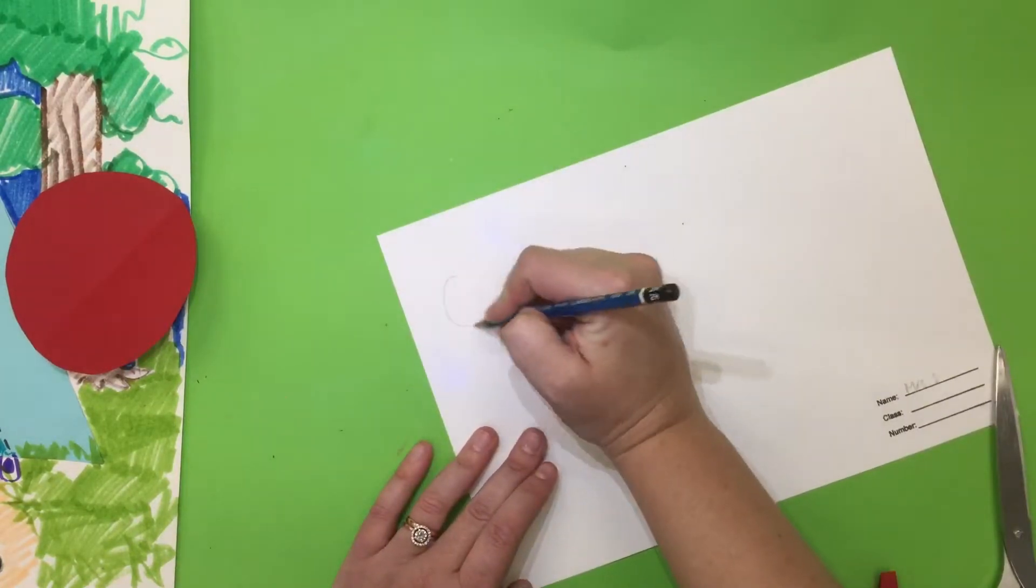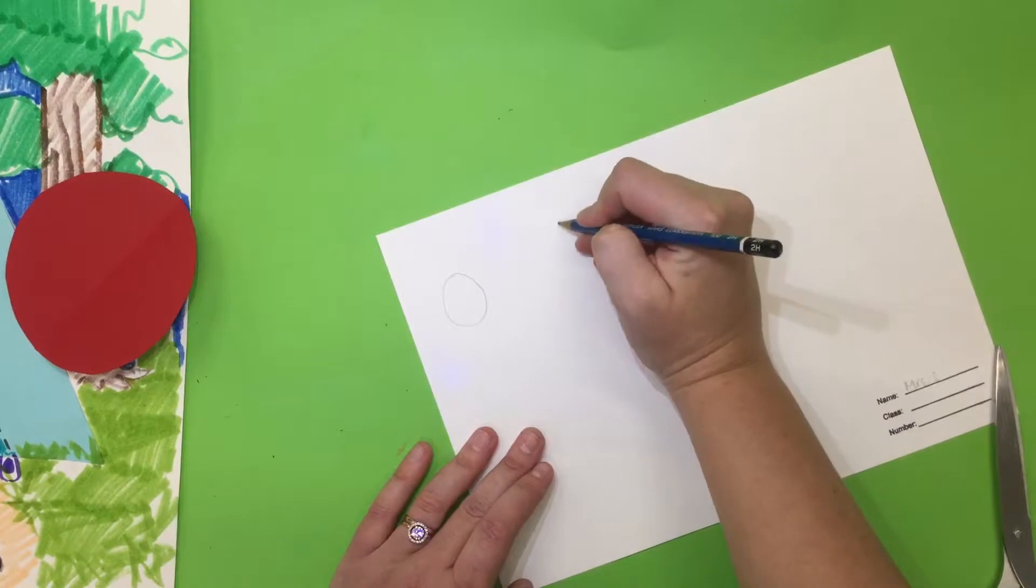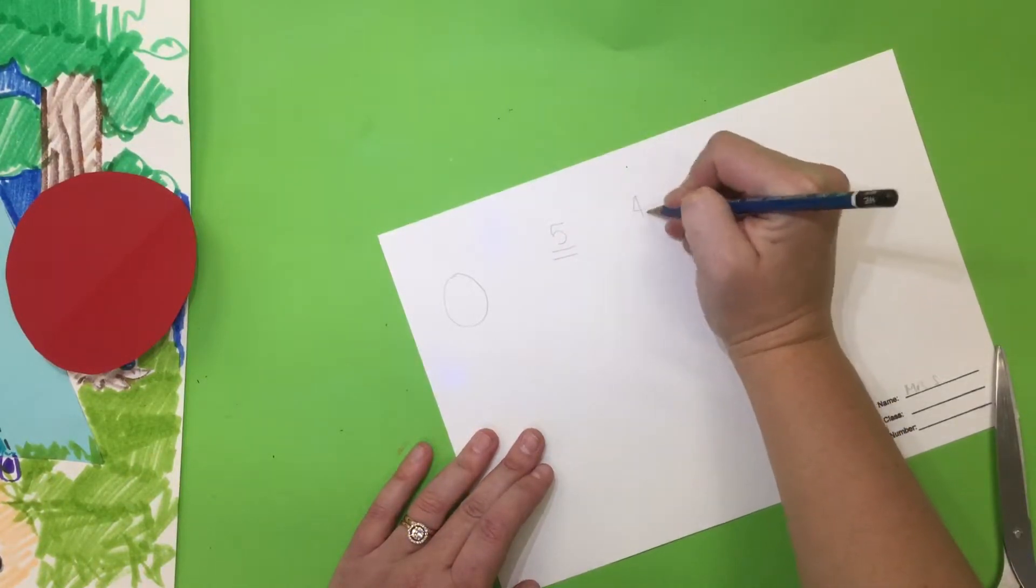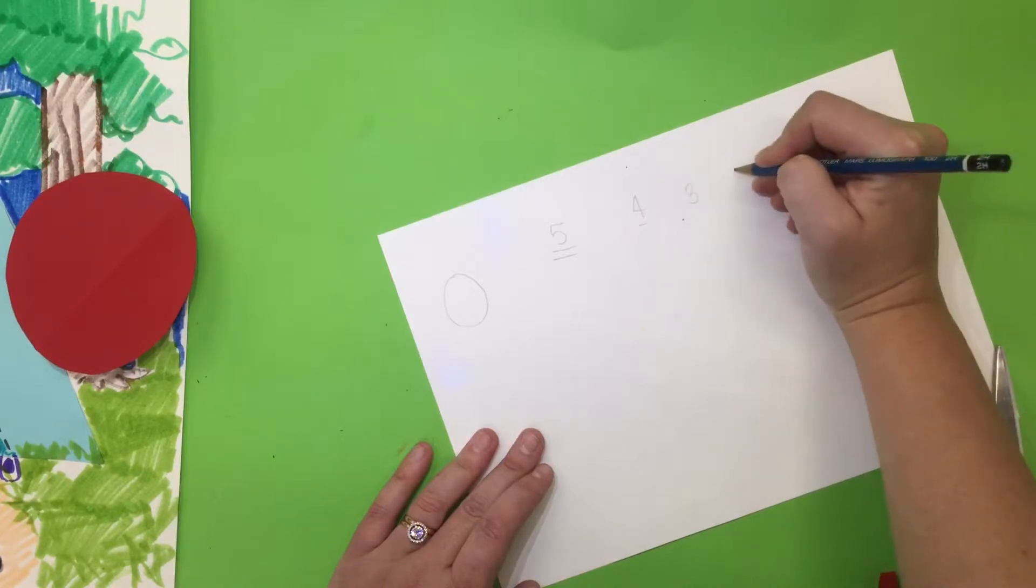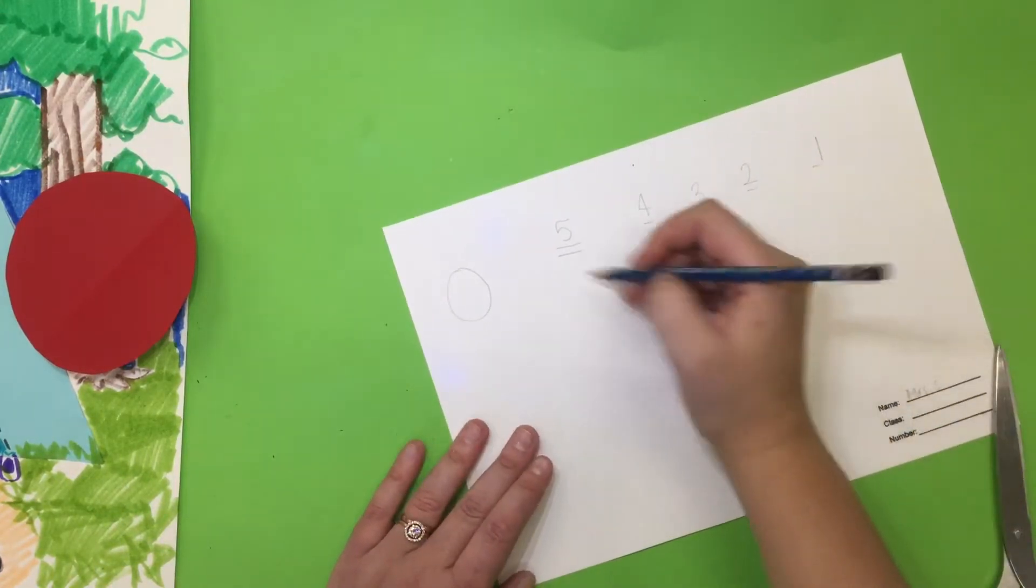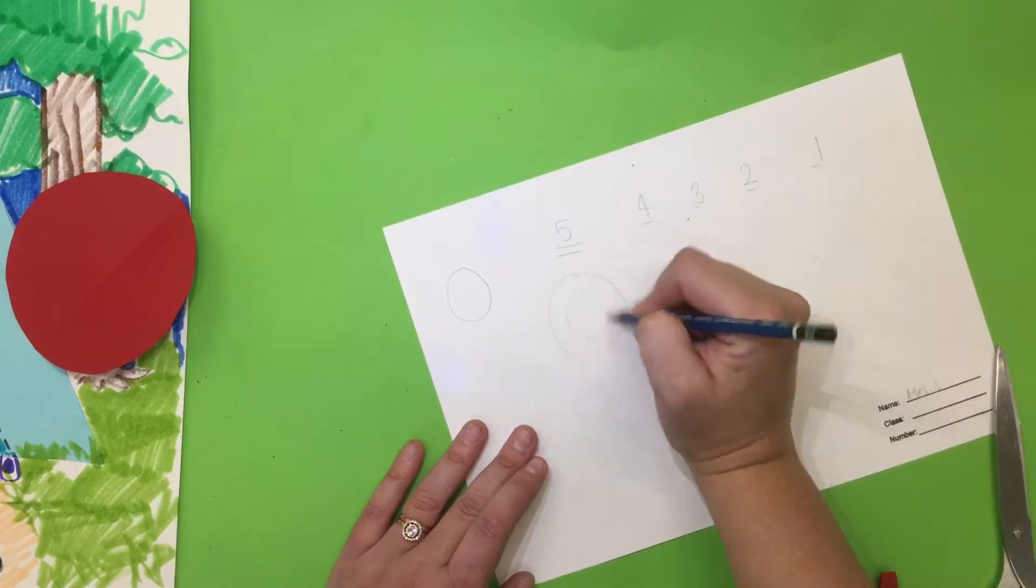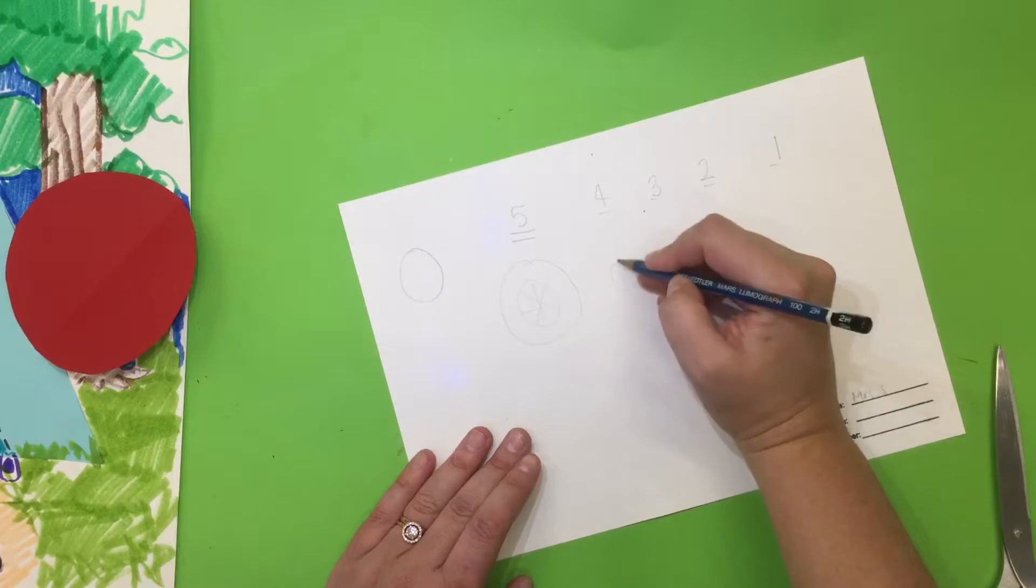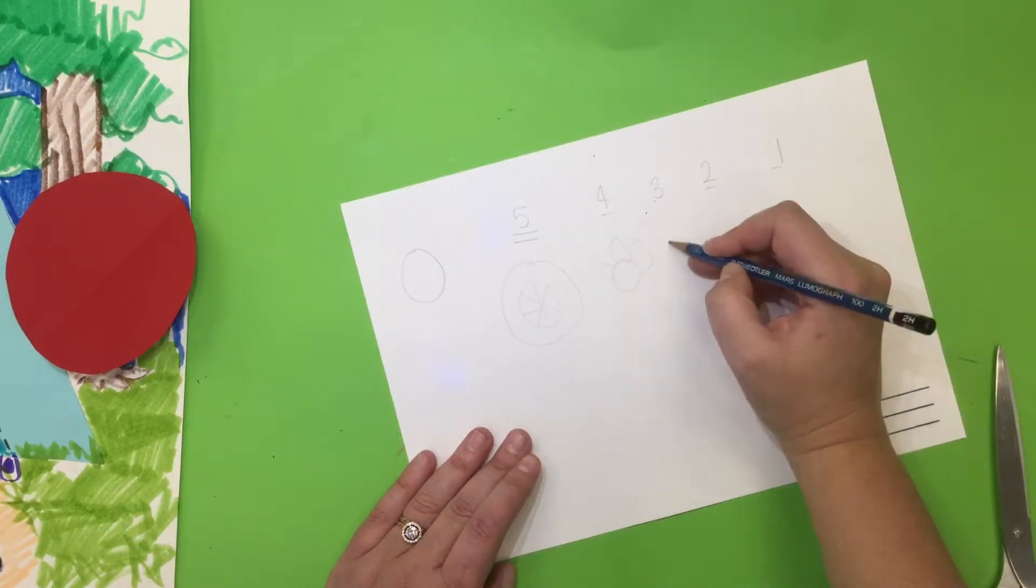And then I'm going to brainstorm five different things that I can make with my circle. So I can make a wheel for a tire. I could make a flower. I could make a head. Some hair.